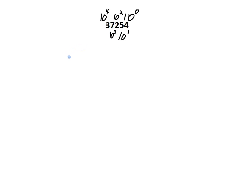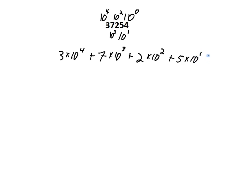To break up 37,254: it's 3 times 10 to the fourth, plus 7 times 10 cubed, plus 2 times 10 squared, plus 5 times 10 to the first, plus 4 times 10 to the zero. So we get 30,000 plus 7,000 plus 200 plus 50 plus 4, giving us 37,254.